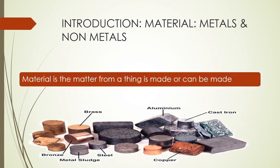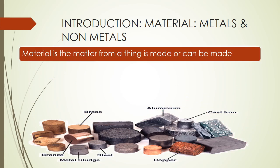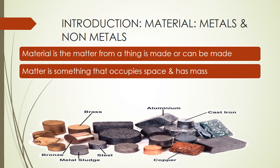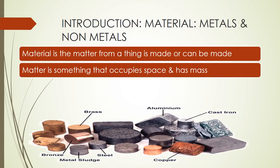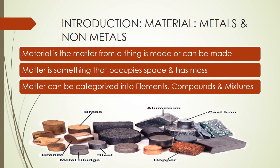First of all, we understand what is material. Material is a matter from which a thing can be made. Matter is something that occupies space and has mass. Matter can be categorized into elements, compounds, and mixtures.